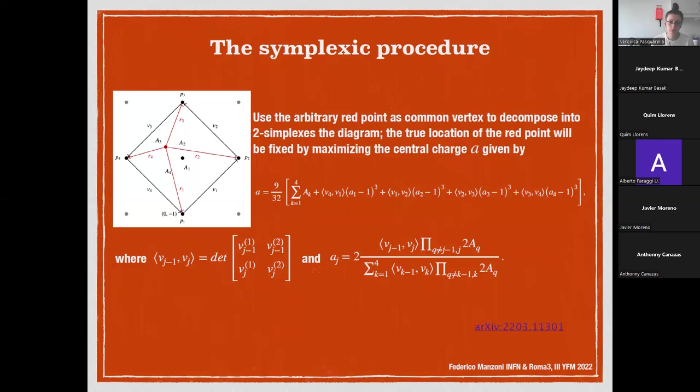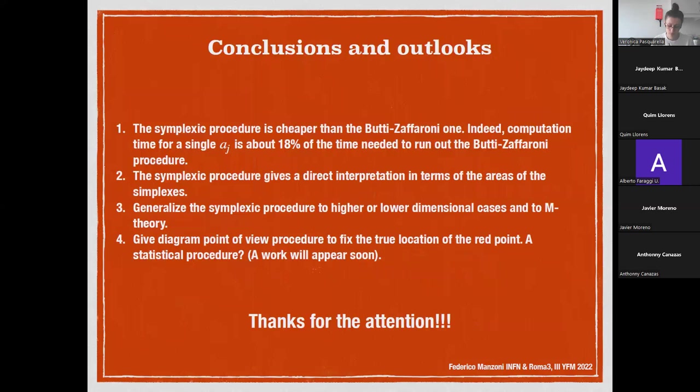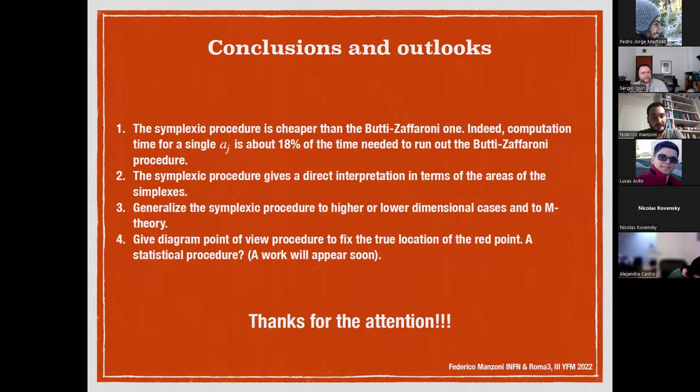For this specific example, the central charge takes this expression. The first term is essentially the total area of the diagram, while the other pieces are constructed using this determinant. The a_j are constructed using the areas of these triangles, so everything is a function of the areas. In conclusion, this symplectic procedure turns out to be cheaper than the Butti-Zaffaroni one, essentially because the computation time for a single a_j is reduced by about one-fifth with respect to the Butti-Zaffaroni procedure.